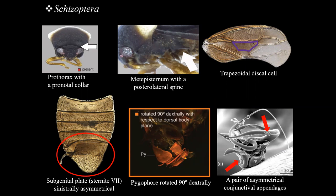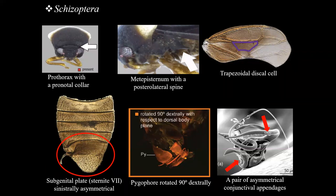You also need to look at the metasternum. The metasternum of these guys has this posterolateral spine. They also have this discal cell in a trapezoidal shape. The males have the subgenital plate — the seventh sternite — which is sinistrally asymmetrical, as you can see right over here. The pygophore is rotated 90 degrees dextrally. For the great majority of Dipsochromorpha, the pygophore is in line with the body, but that's not the case in Schizoptera. They also have a pair of asymmetrical conjunctival appendages — a small left one and a longer right conjunctival appendage.